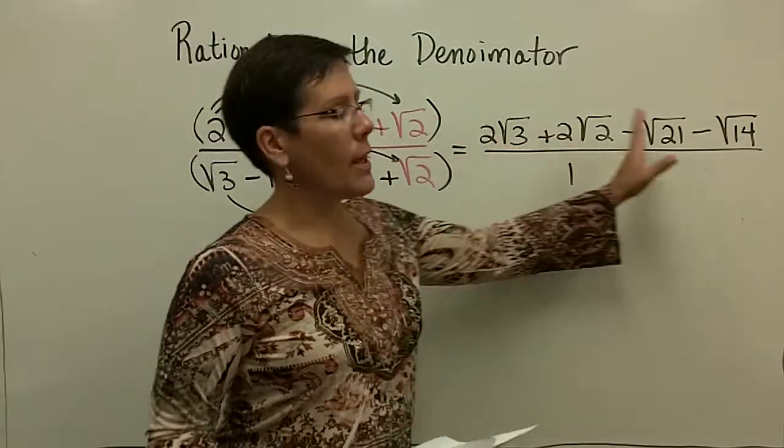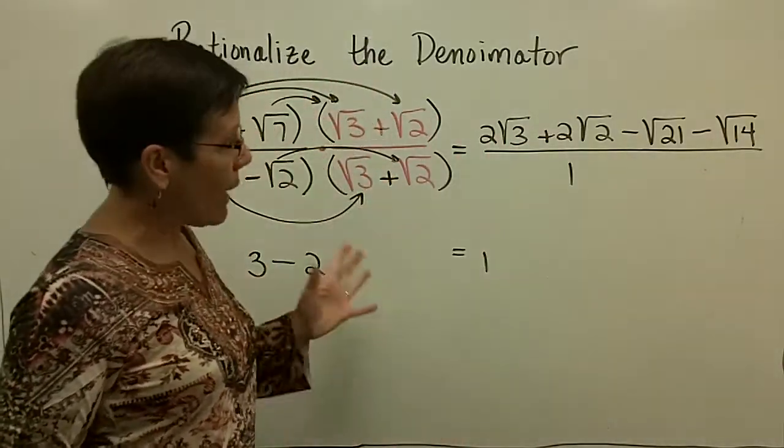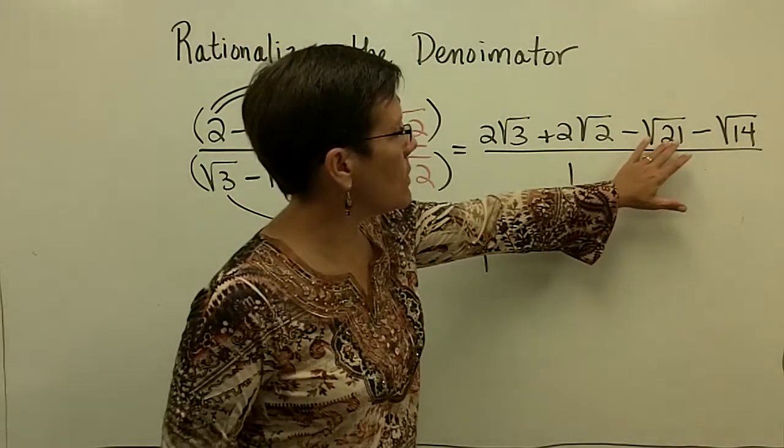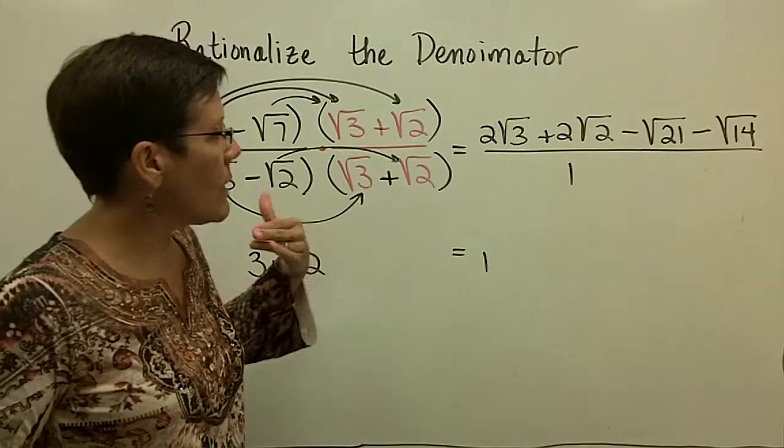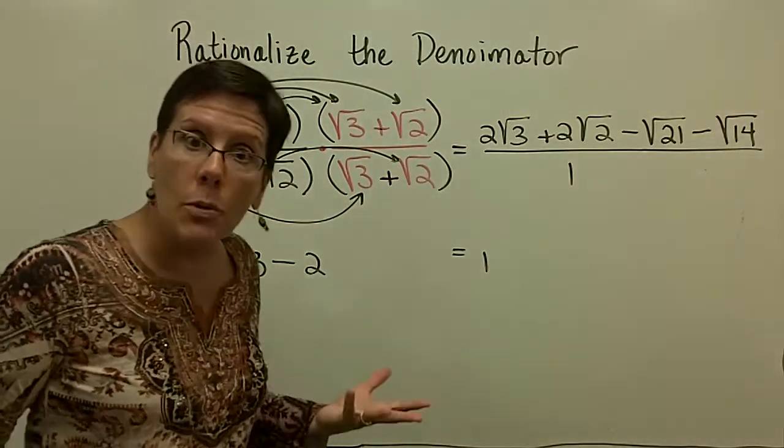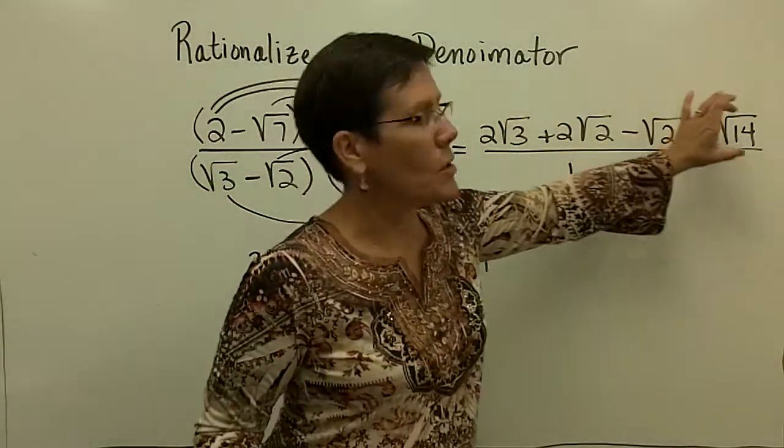And there is nothing up there that can be combined - none of those are like terms. That can't be reduced because it's only 3 times 7, that's only 2 times 7. Can't pull anything out over that denominator 1. Don't need to write that 1. Your answer will be just what's in the numerator.